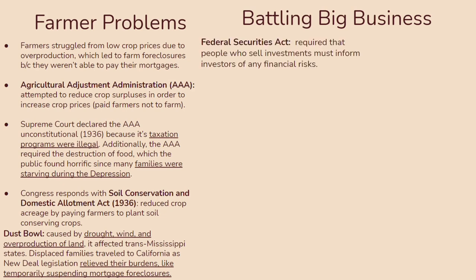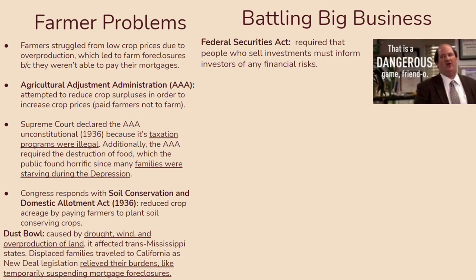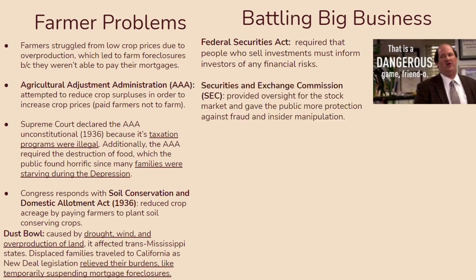Let's talk about battling big business. You should know about the Federal Securities Act, which required that people who sell investments must inform investors of any financial risks. One of the reasons the depression even started was because people were putting investments in really risky businesses. So to ensure that doesn't happen again, people would be informed of the risks of their investment to make sure they were more careful about it.